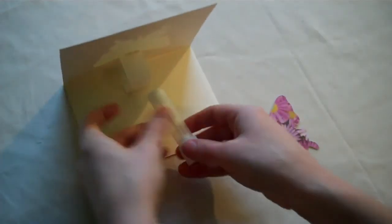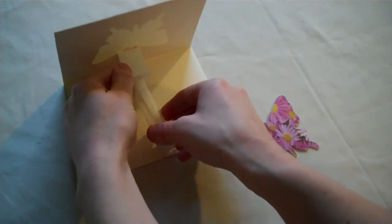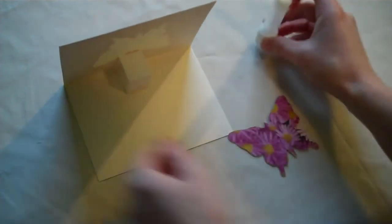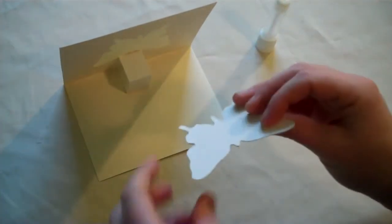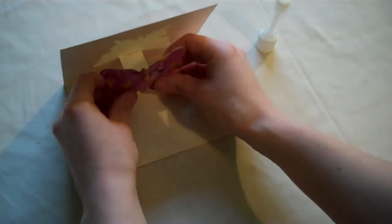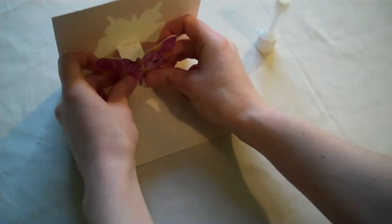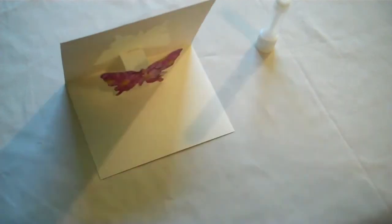So next you'll put some glue right on the front side of your square. And then you'll take your cardstock butterfly, your butterfly with the cardstock attached to it, and glue it right to the square.